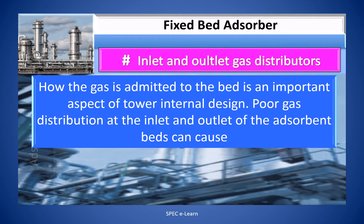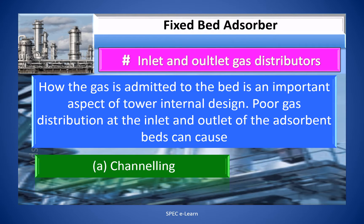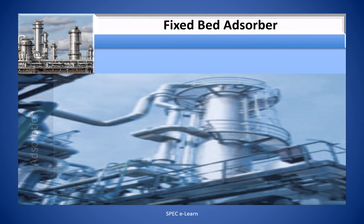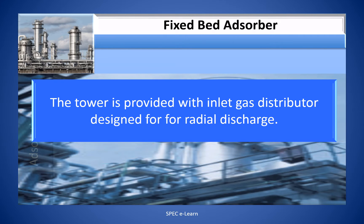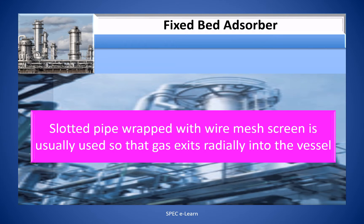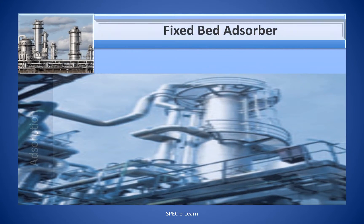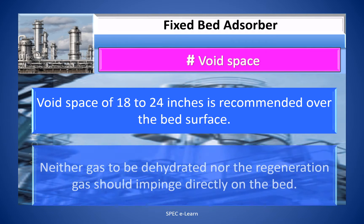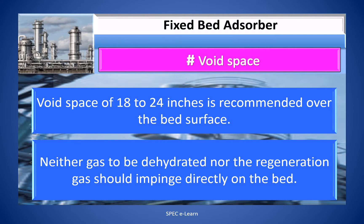Inlet and outlet gas distributors. How the gas is admitted to the bed is an important aspect of tower internal design. Poor gas distribution at the inlet and outlet of the adsorbent bed can cause channelling and adsorbent damage. The tower is provided with an inlet gas distributor designed for radial discharge. Radial discharge of gas from distributors will prevent direct impingement on the adsorbent particles. A slotted pipe wrapped with wire mesh screen is usually used so that the gas exits radially into the vessel. A wide space of 18 to 24 inches is recommended over the bed surface. Neither the gas to be dehydrated nor the regeneration gas should impinge directly on the bed.